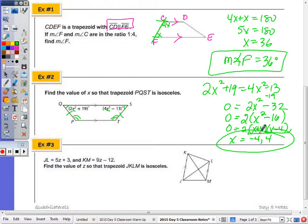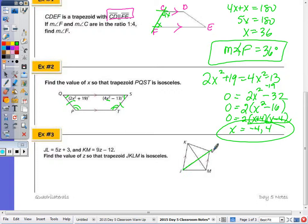Number 3, we're given the lengths of JL. JL is a diagonal, and KM, which is a diagonal. Find the value of Z so that it's a trapezoid. I want the diagonals to be congruent. So real easy, 5Z plus 3 equals 9Z minus 12. Add the 12 to 3, we get 15. 9 minus 5 is 4. So how many times does 4 go into 15? It doesn't go in evenly. So it goes in at least, 4 times 3 is 12, 4 times 4 is 16. So it goes in at least 3 times, 15 minus 12 is 3, so 3 fourths would be 0.75.